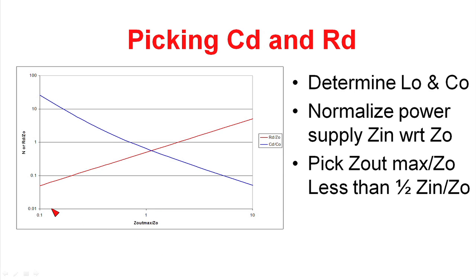On the x-axis, we show the ratio of the output impedance of the filter divided by the characteristic impedance. And remember, the characteristic impedance is just the square root of L over C. And we've shown two curves here. The red curve is the value of the damping resistor with respect to the output filter characteristic impedance. And you can see that there's a blue curve here also. And the blue curve is the ratio of the damping capacitor to the output capacitor.